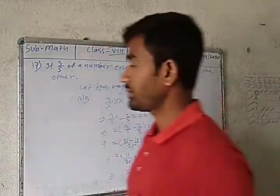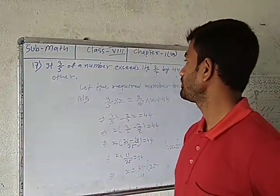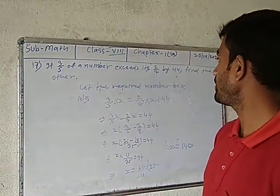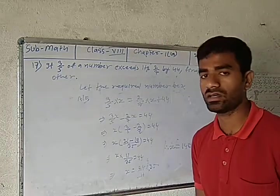The next question is: if 3/5 of a number exceeds its 2/7 by 44, find the number.